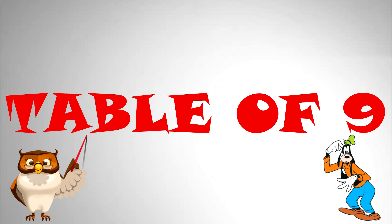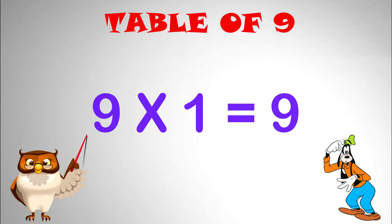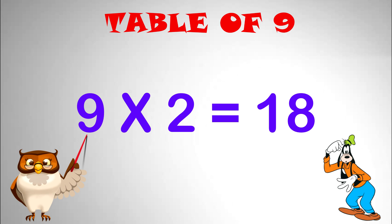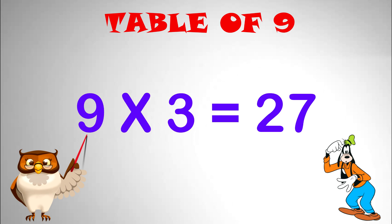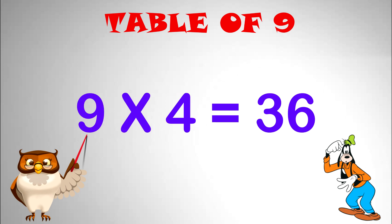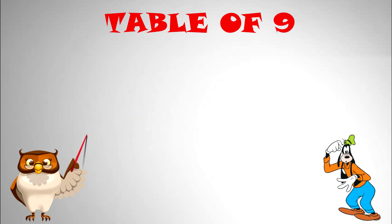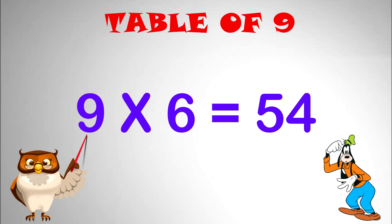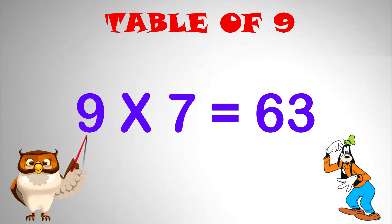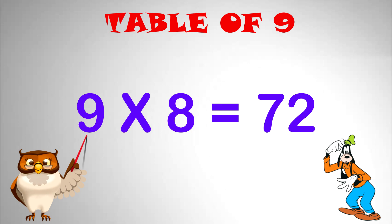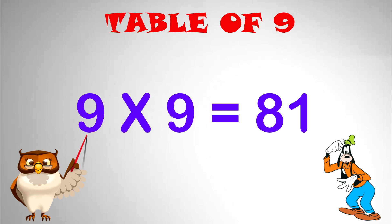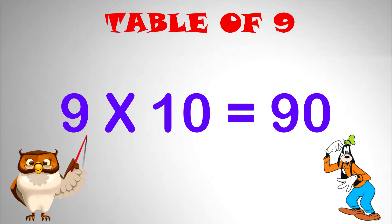Table of 9. 9 x 1 equal to 9. 9 x 2 equal to 18. 9 x 3 equal to 27. 9 x 4 equal to 36. 9 x 5 equal to 45. 9 x 6 equal to 54. 9 x 7 equal to 63. 9 x 8 equal to 72. 9 x 9 equal to 81. 9 x 10 equal to 90.